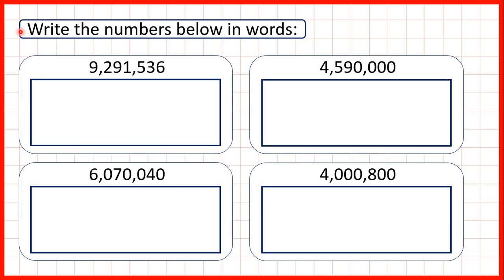We need to write the numbers below in words. So here we have seven-digit numbers. When seven-digit numbers are written out, we either have two spaces or two commas like we have here. These help us to write the number in words or to read the number, because the first comma or space always comes after the millions digit and before the hundred thousands digit, and then the second comma or space separates the thousands from the hundreds.